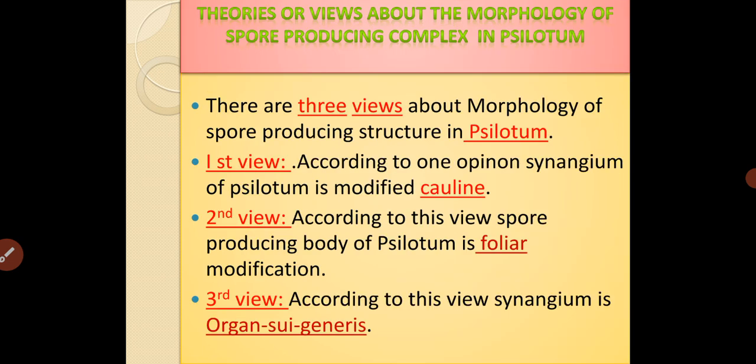Let us move towards the theories or views about the morphology of the spore-producing complex in Silotum. There are three views. The first view says that synangium is the modified cauline, that is nothing but the modified stem. According to the second view, synangium is the modified leaf or it is a foliar modification. According to the third view, synangium is neither stem modification nor foliar modification — such a view is considered as organ sui generis, meaning it is an organ of its own kind.